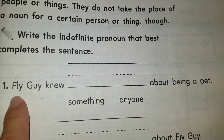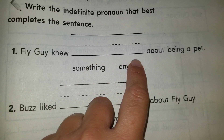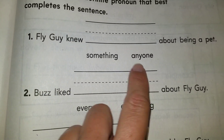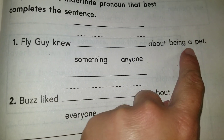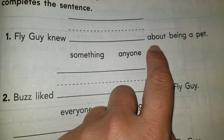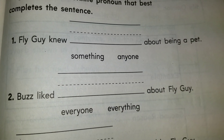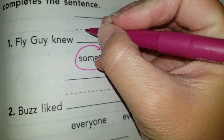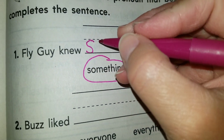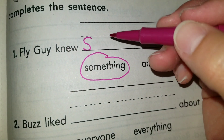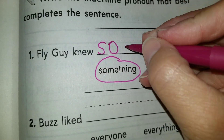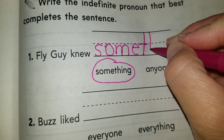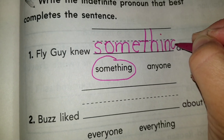Let's go ahead and read sentence number one: 'Fly Guy knew blank about being a pet.' Which is the right indefinite pronoun? 'Fly Guy knew something about being a pet' or 'Fly Guy knew anyone about being a pet.' Which one makes more sense? Something, right? So we're going to circle 'something' and write it down. Make sure, boys and girls, lowercase letters are from the daughter line down — except some like T and H, which go from the top.